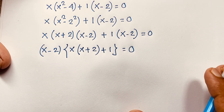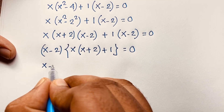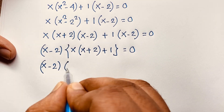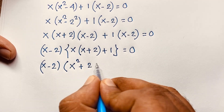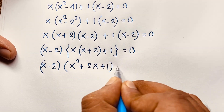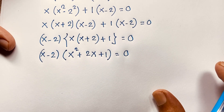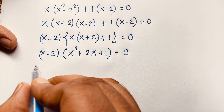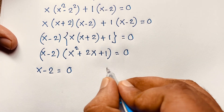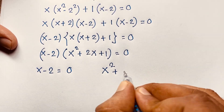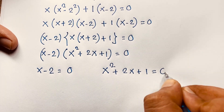I have solved this step by step. Expanding x times (x plus 2) gives x squared plus 2x, and adding 1 gives x squared plus 2x plus 1. So we have two cases: first case, x minus 2 equals 0; second case, x squared plus 2x plus 1 equals 0.